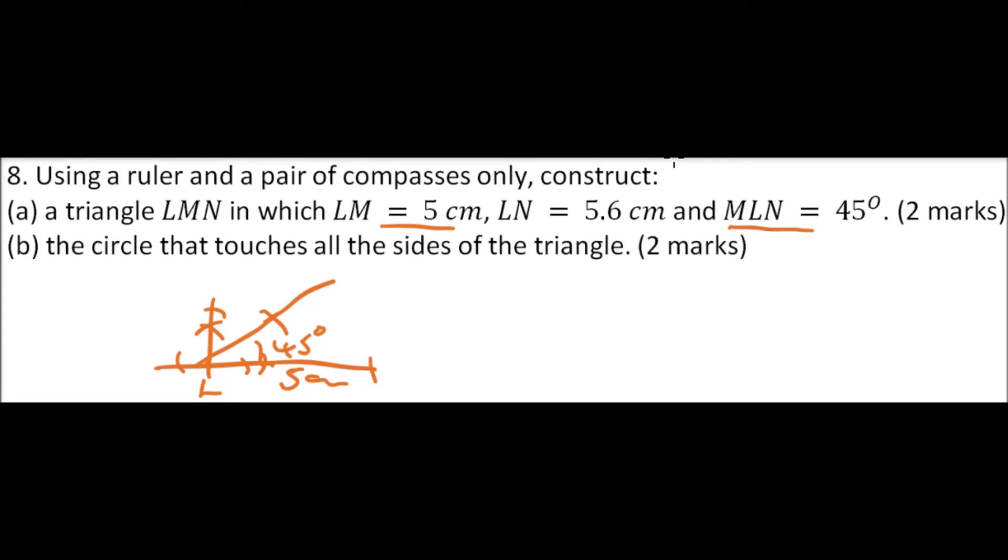From there, since you are told LN is 5.6 cm, so you measure 5.6 cm with your divider, then use your compass to make that mark. Then this is your N, then you can join the 2, this is our M. So that way you will be able to come up with the triangle LMN.